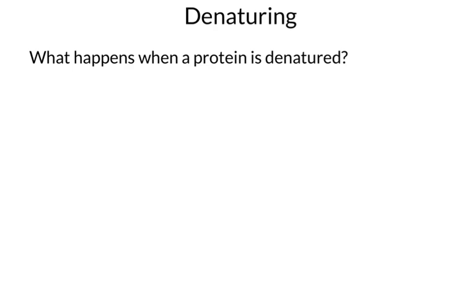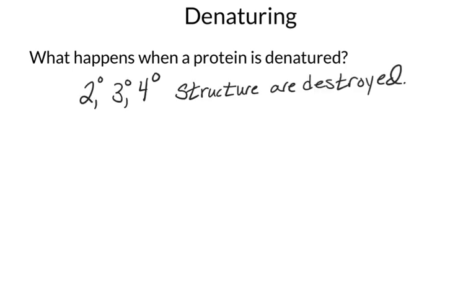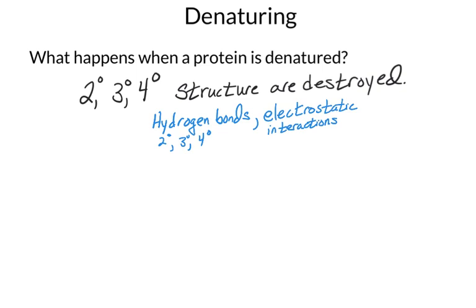Specifically, we're going to be destroying all of those weak interactions. Those are the ones found in secondary, tertiary, and quaternary structure. So one of the things that happens when a protein is denatured is that secondary, tertiary, and quaternary structure are destroyed. Recall that those are things like hydrogen bonds, electrostatic interactions, hydrophobic interactions, and disulfide bonds.